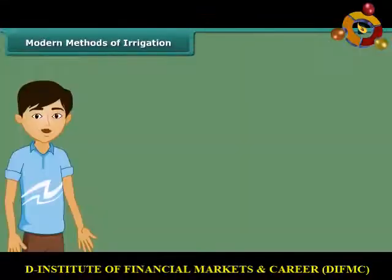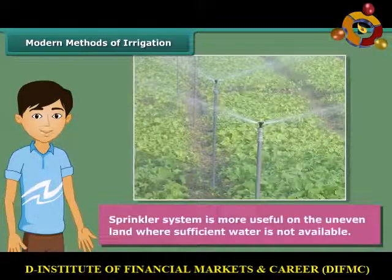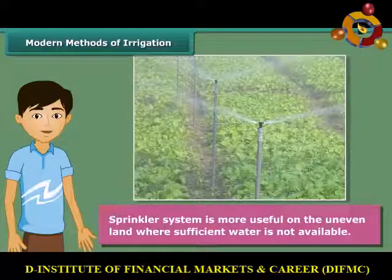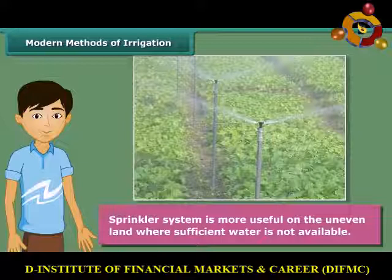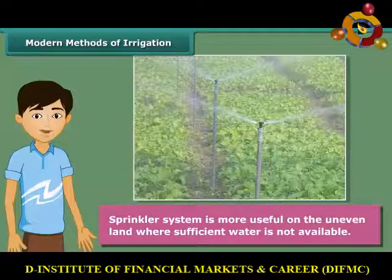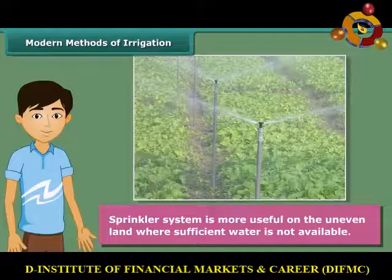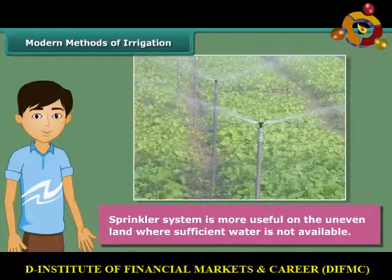Let us now know modern methods of irrigation. A sprinkler system is most useful on uneven land where sufficient water is not available. In this system, perpendicular pipes having rotating nozzles on top are joined to the main pipeline at regular intervals. When water is allowed to flow through the main pipe under pressure with the help of a pump, it escapes from the rotating nozzles and gets sprinkled on the crop as if it is raining.